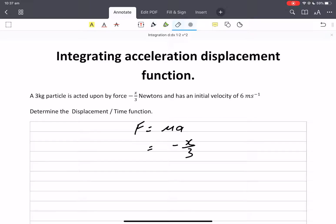So this other side becomes our ma, mass is three. So we get acceleration is minus x on nine.